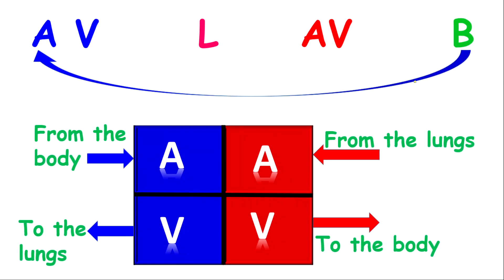Let's apply this now to a simple structure. Remember our right side and our left side. Blood comes from the body into the right atrium, then into the right ventricle, and back to the lungs. The upper and lower chambers are separated by valves. Then it comes back from the lungs into the left atrium, then into the left ventricle, then back to the body. Notice the have, love, be mnemonic works.